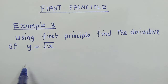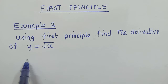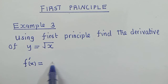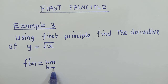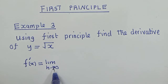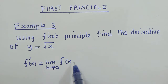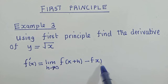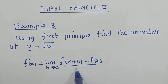Alright, so to answer this, we are going to use this formula. So f prime of x is equal to limit as h approaches 0. This is the formula we are going to use right here. We have f(x+h) minus f(x) over h.